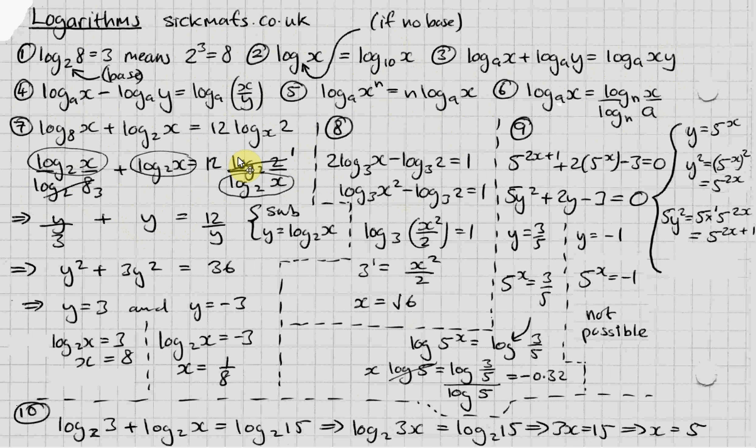So what we have now is log base 2 of x over 3 plus log base 2 of x equals 12 over log base 2 of x. That's a 1. To make it look easier, we're going to do a quick substitution and change all of these for y. Sub y equals log base 2 of x. So basically, that's why I circled all of them. And so multiply it all by 3y just to get rid of these ugly fractions. You get this. Rearrange it into a quadratic. And you basically get these two solutions. And then bring back the log 2 of x, because y is equal to log base 2 of x. So log base 2 of x equals 3 and minus 3, which means 2 to the power 3 equals 8. So x equals 8. And 2 to the power minus 3 equals 1 eighth. So x equals 1 eighth.